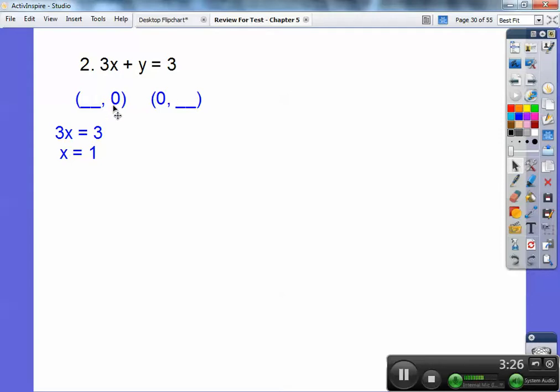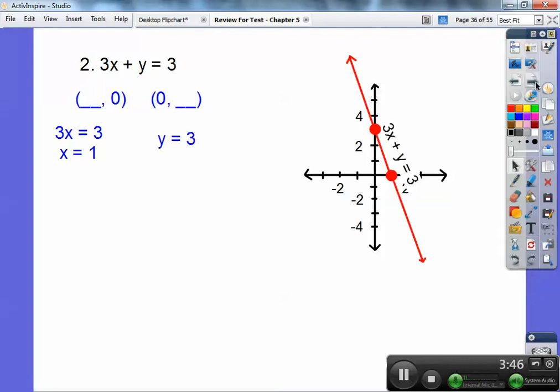For my x-intercept right here, I let y be 0. It gets rid of that. And you're just left with 3x equals 3 or x equals 1. And then when you get rid of the x right here, when x is 0, y equals 3. So just graph those two points. Those are my x-intercepts. There's x equals 1 right there. There's y equals 3 right there. You're going to connect them with the line. Don't forget to label your line with the equation right next to it.